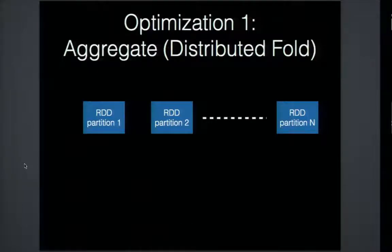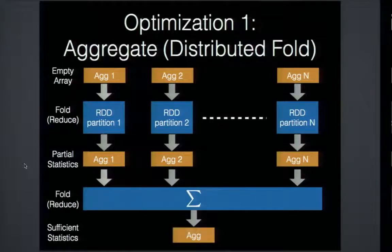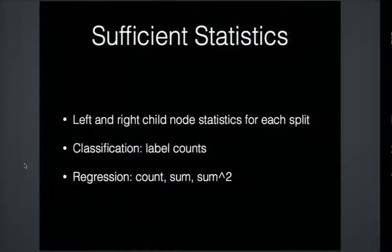To do that, we took our training data spread over multiple partitions across many machines and created aggregated partial statistics on each partition. We start with an empty array, go through each instance, update the split statistics for every split candidate, and then combine them into sufficient statistics. These sufficient statistics are the left and right child node statistics for each split candidate — for classification, the label count for each label; for regression, the count, sum, and sum of squares for variance or mean squared error calculation.